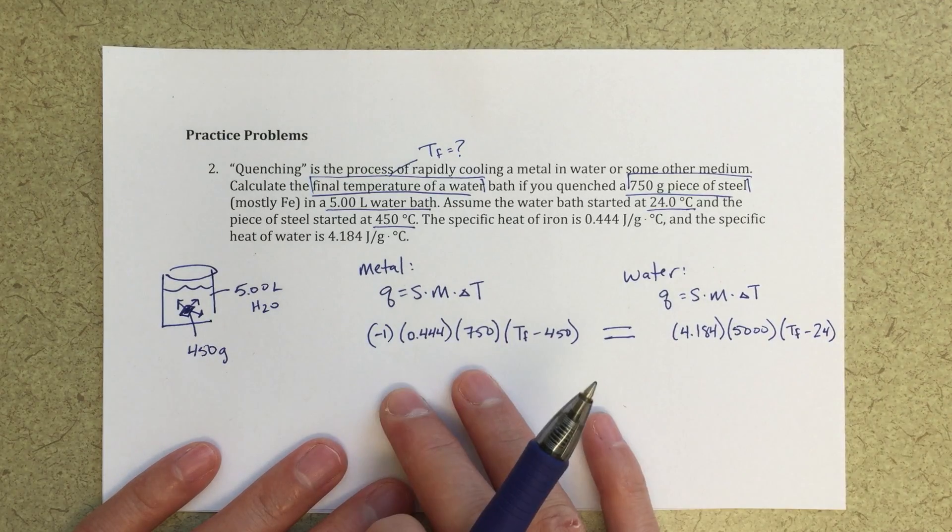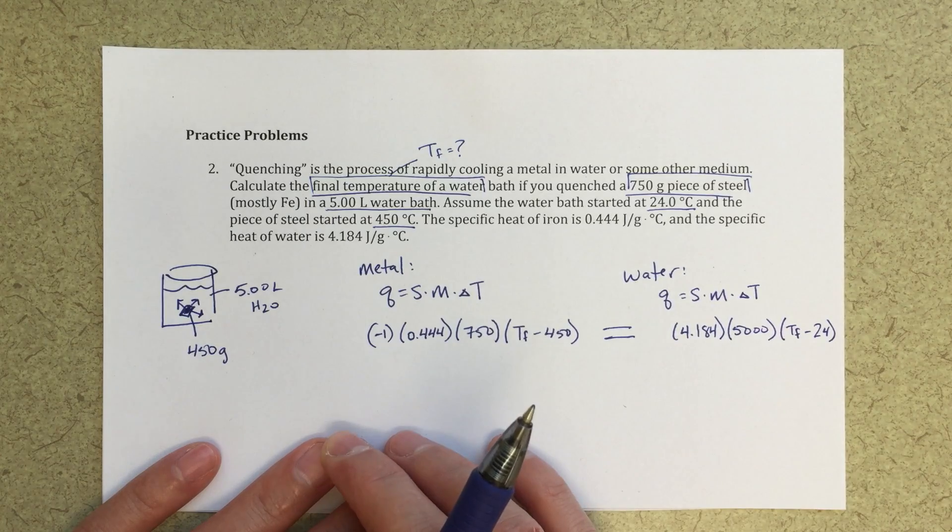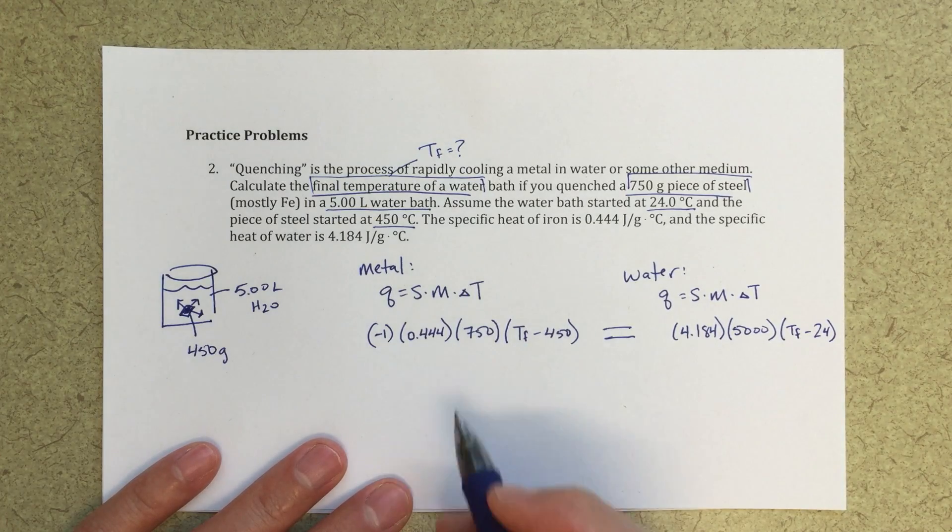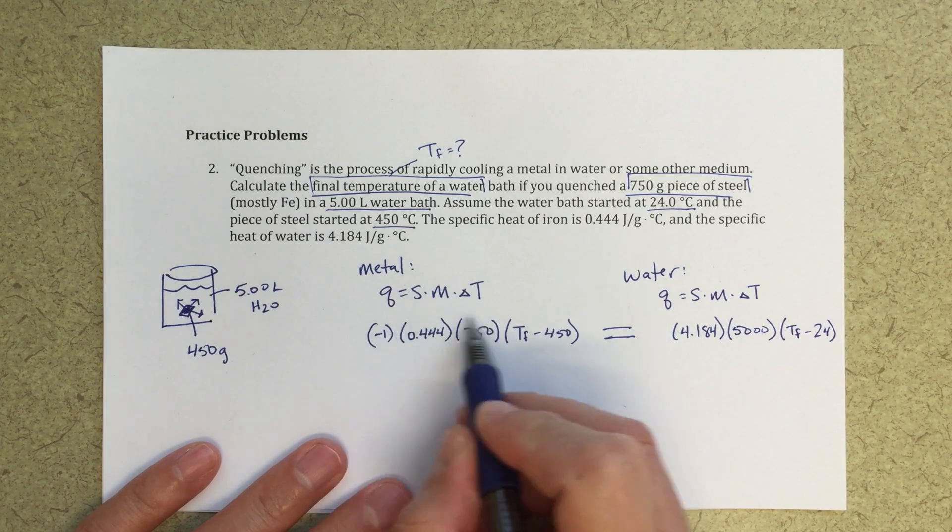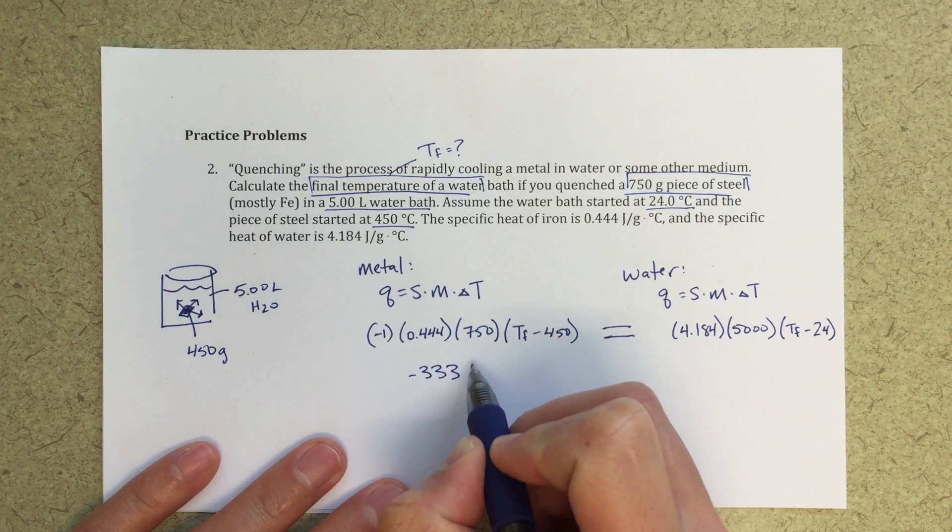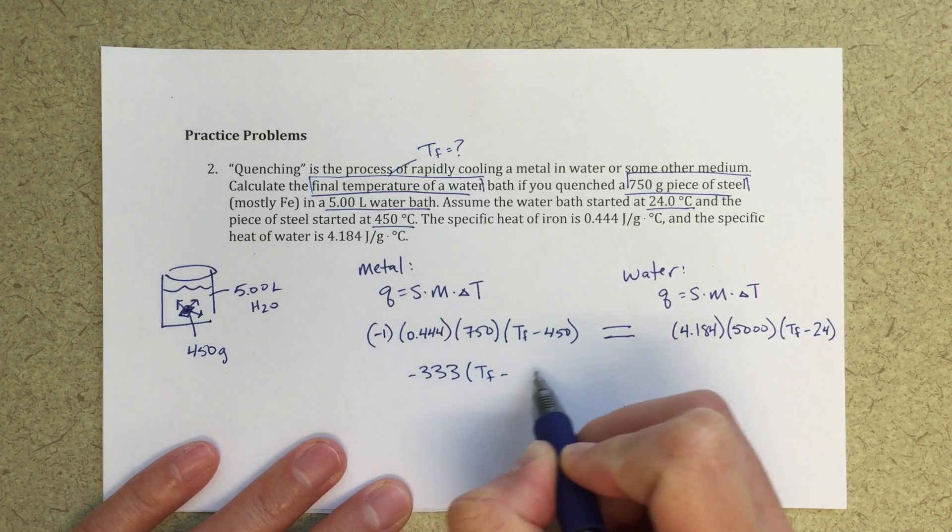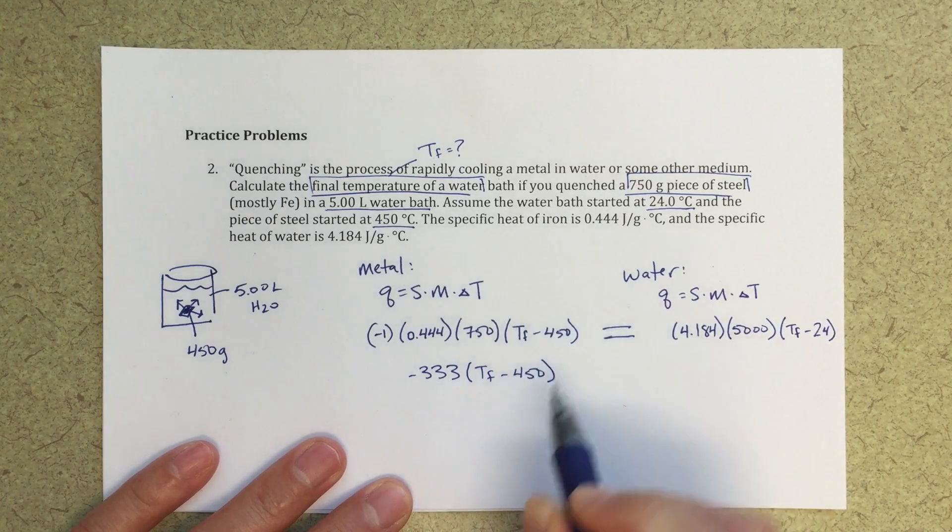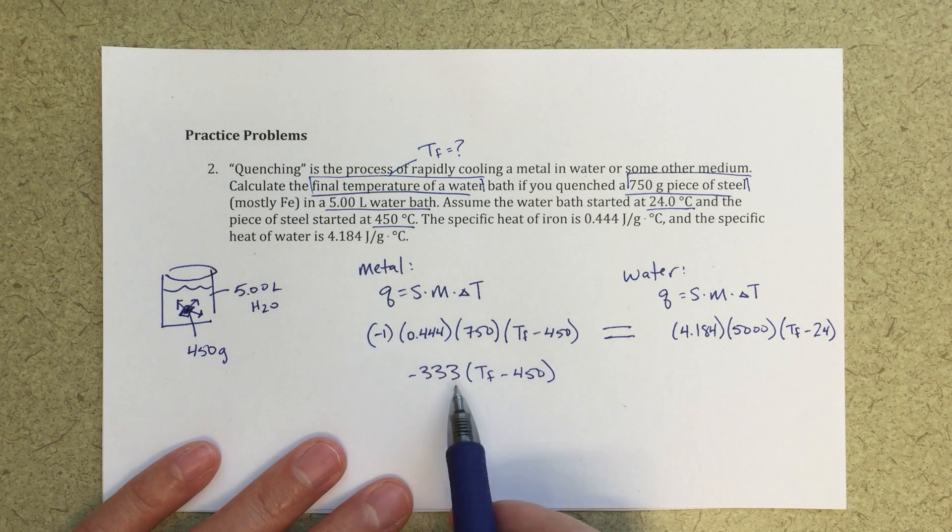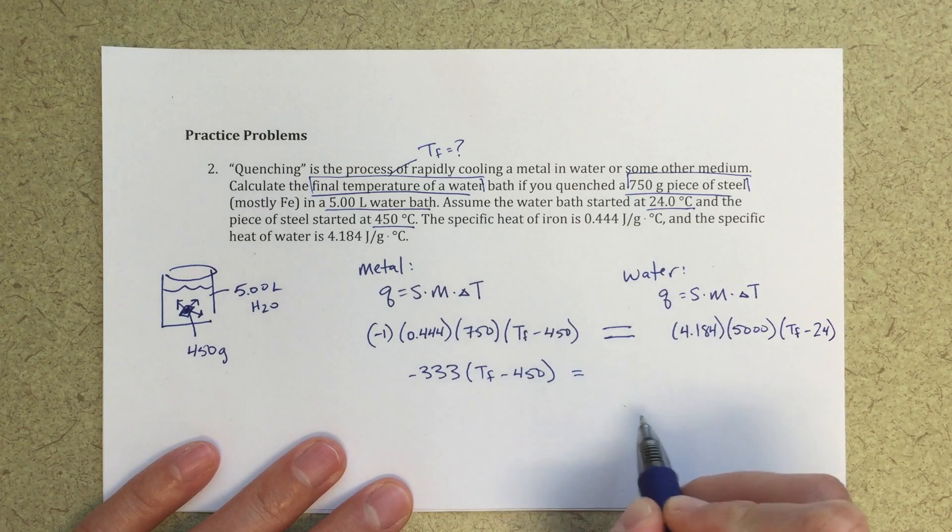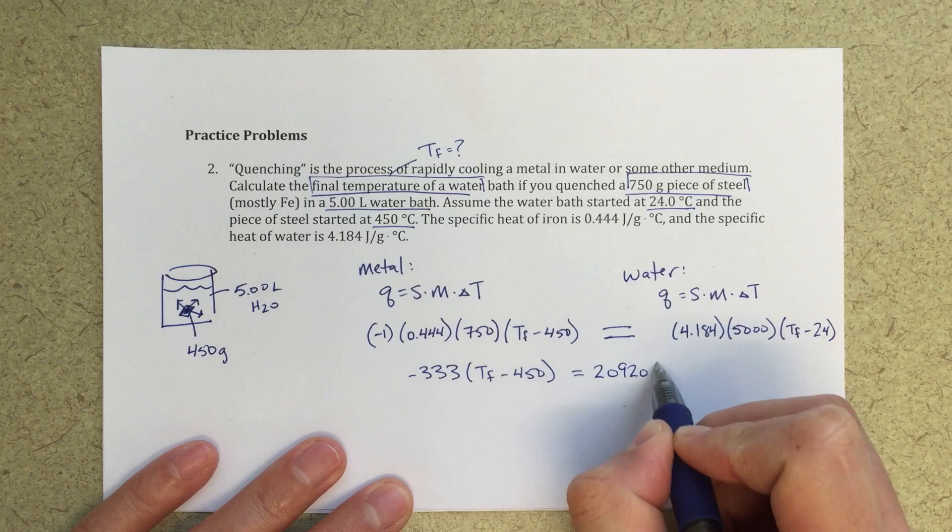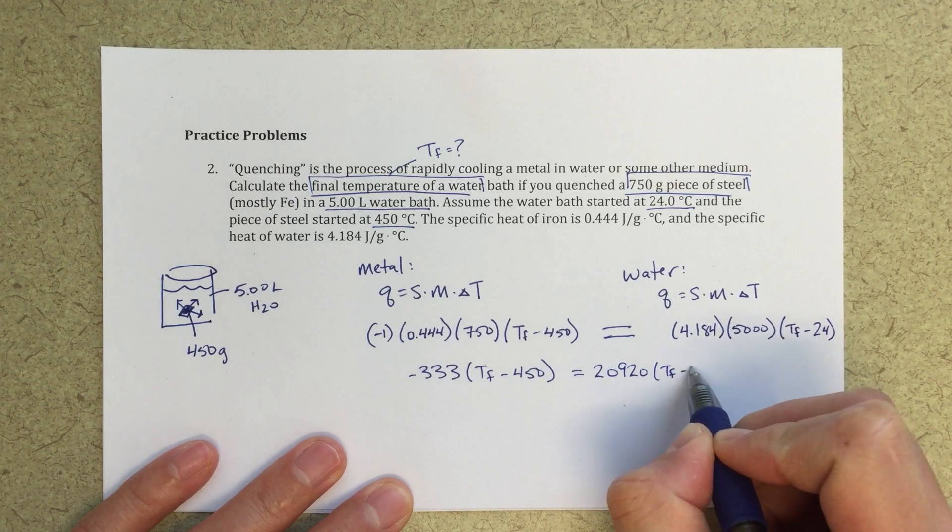So now I've got this big equation, and there's only one unknown, and I can go ahead and solve for this t final. So the way that I would do that, I would sort of group things together. So I'll show you that calculation here. So the first thing I'm doing is just multiplying this out, minus one times 0.444 times 750 gets me to here. That's going to be equal to 20920 t final minus 24.